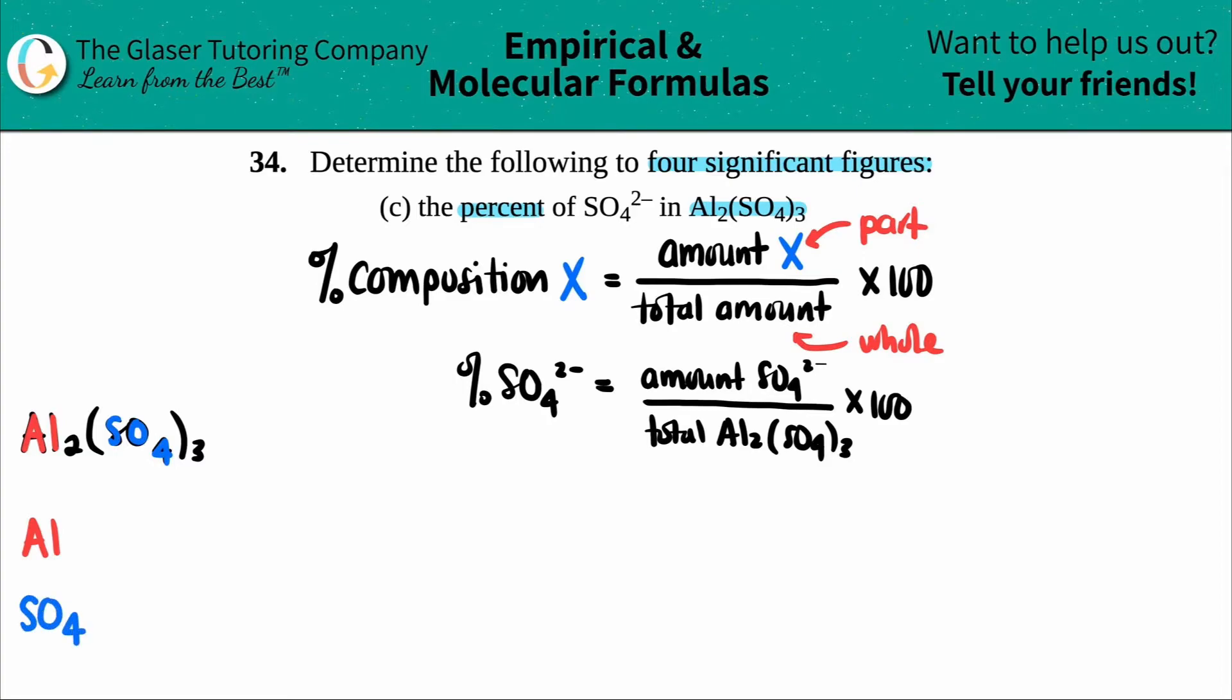In this case, I have aluminum and my SO₄. How many aluminums and sulfates do we have? I have two aluminums, so two of those. But how many sulfates? This four is with the whole sulfate, but on the outside there's a three. I have three sulfates.